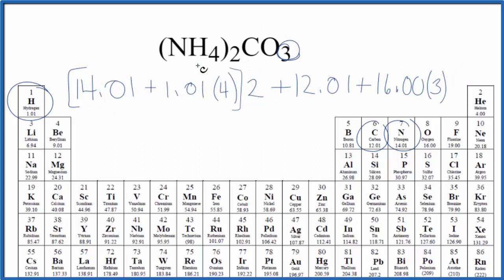We'll take and calculate this number, multiply it by two, and then add it to the carbon and the three oxygens. We do that, we find the molar mass for (NH4)2CO3, this ammonium carbonate, is 96.11, and the units are grams per mole.